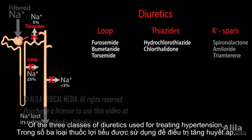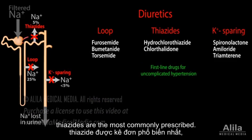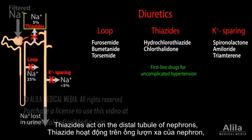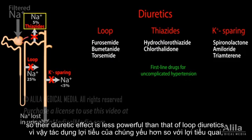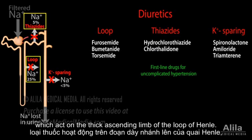Of the three classes of diuretics used for treating hypertension, thiazides are the most commonly prescribed. Thiazides act on the distal tubule of nephrons, which reabsorbs only a small portion of the sodium load. So their diuretic effect is less powerful than that of loop diuretics, which act on the thick ascending limb of the loop of Henle.